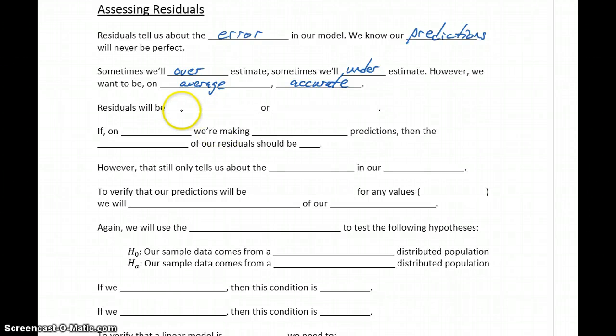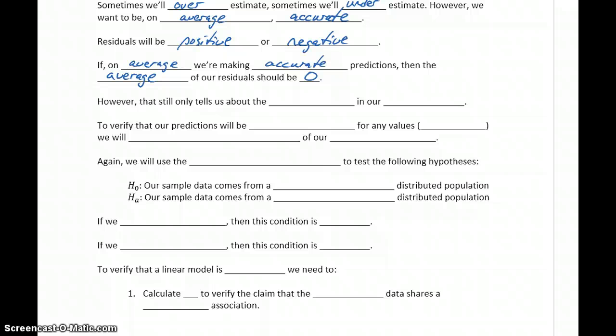Residuals will be either positive or negative, depending on whether we're under or overestimating. So if on average we're making accurate predictions, then the average of our residuals—keeping in mind sometimes they'll be positive, sometimes negative, but hopefully relatively close to zero. So if we have a few positive values, a few negative values, averaging those out should average to zero. If the average of our residuals is zero, it means our model is doing a good job of making predictions.